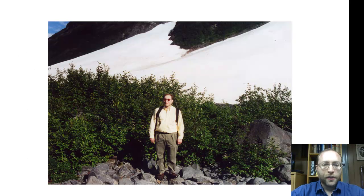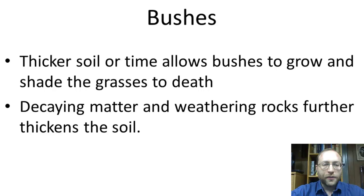When the soil becomes thick enough, we end up with some bushes. There I am a little younger with more hair and no beard — but that's me, still pretty close to the glacier. We have a thicker soil, and time allows the bushes to grow. The grasses die because they need a lot of sunlight, and the shade from the bushes kills them. As decaying matter and weathering rocks cause the soil to become thicker and thicker, a new community comes up.